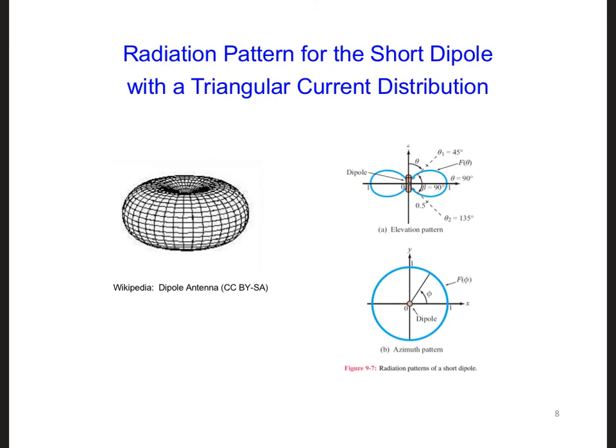In these plots, you can see the maximum power is radiated horizontally away from the dipole. Now, if we wanted to sum up the total power being radiated in all directions away from the short dipole, how do you think we could go about doing this? See if you can calculate the total power being radiated by this antenna.